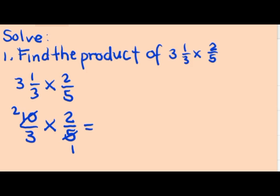So now, we will multiply the numerator: 2 multiplied by 2 is equal to 4. And 3 multiplied by 1 is equal to 3.